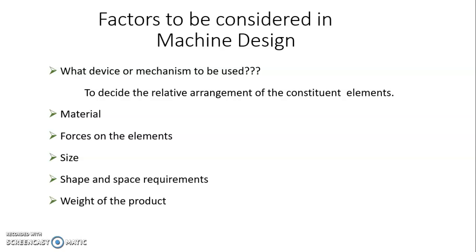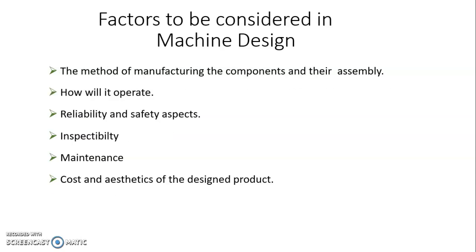Another important factor is the size of the final product. Then comes shape and space requirement — for example, in gearbox design, the primary requirement is that the gearbox be compact in size, and you must determine the minimum space required. The weight of the product is also another factor to be considered.